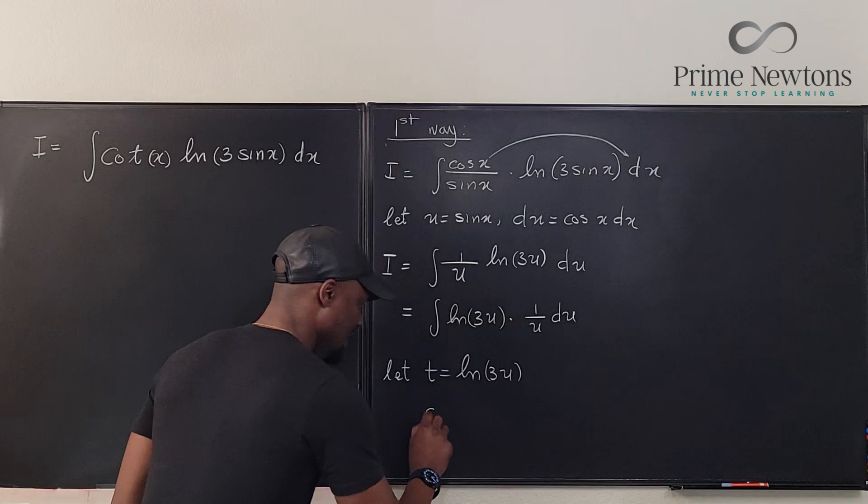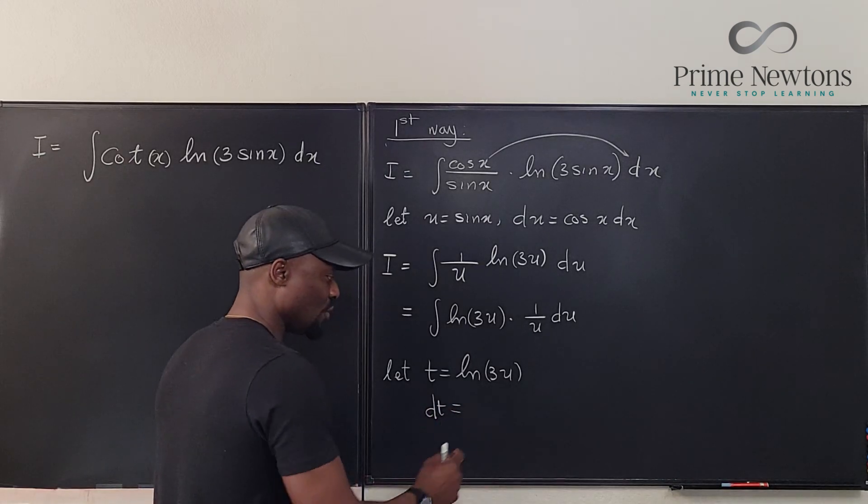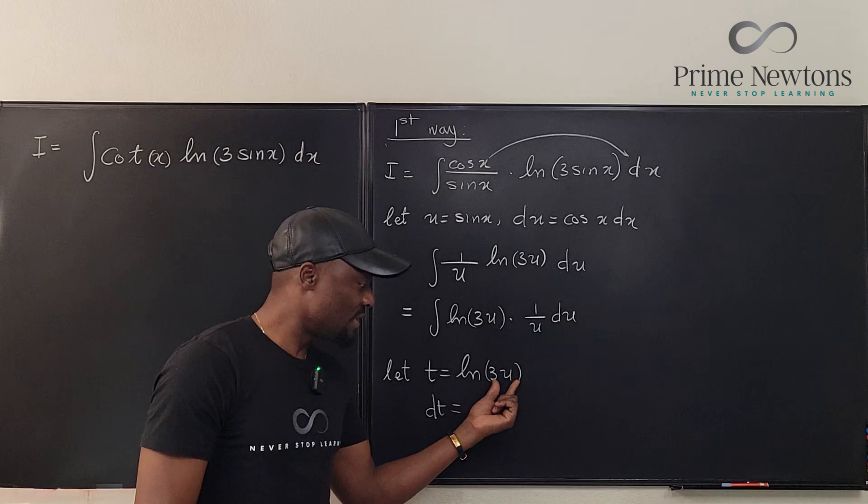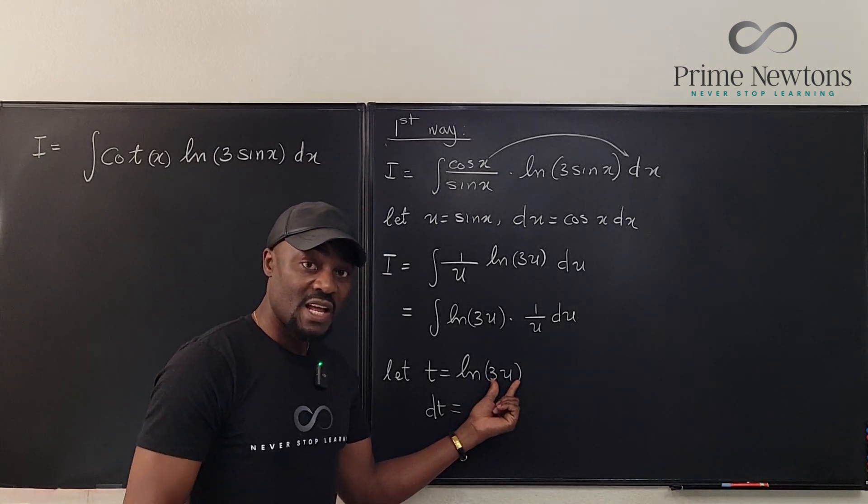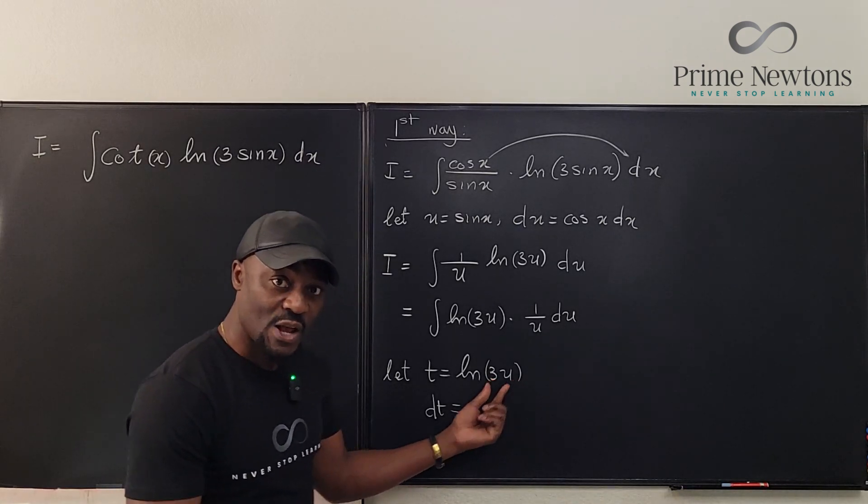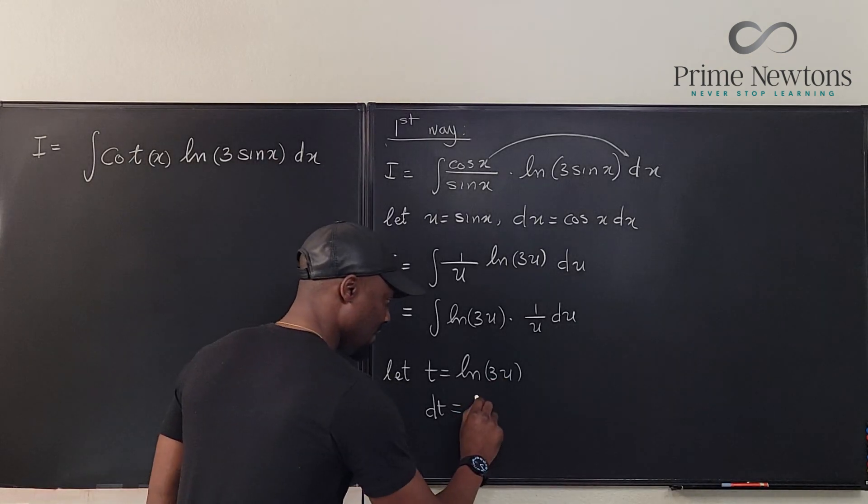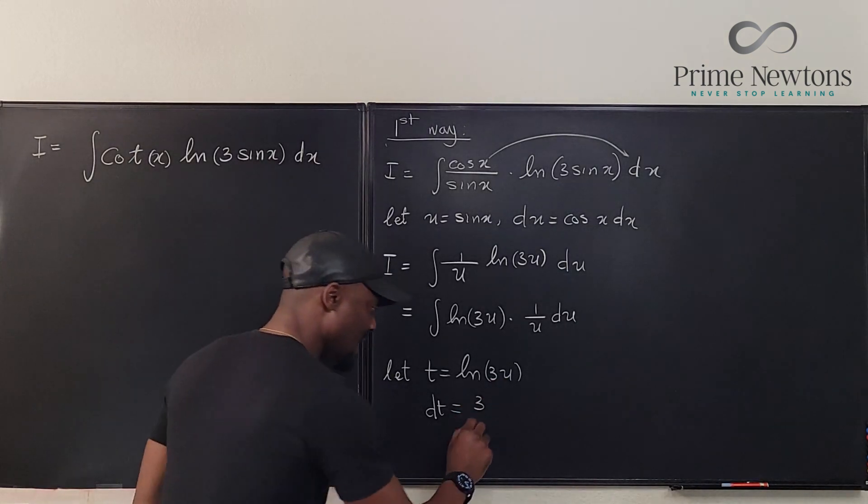So dt will be equal to—if you differentiate natural log of anything, it is the derivative of what's inside divided by what's inside—so this is going to be the derivative of 3u, which is 3, divided by 3u.